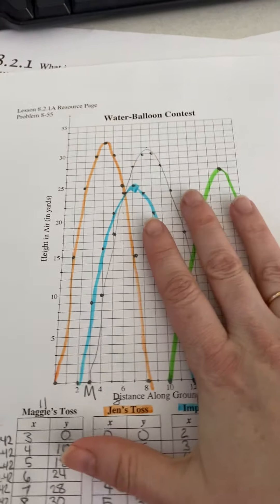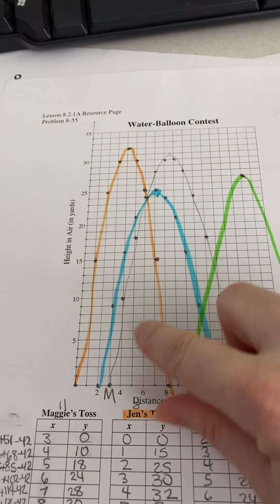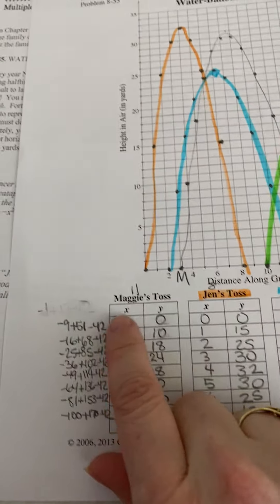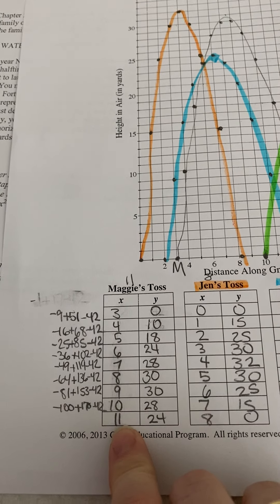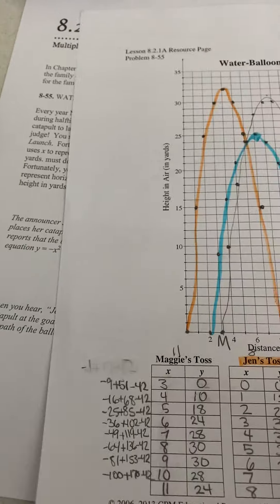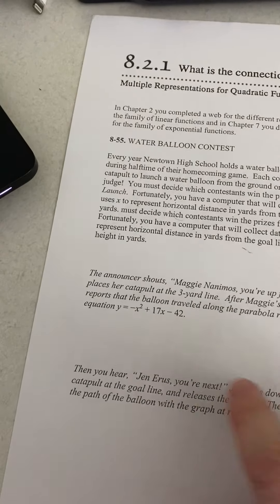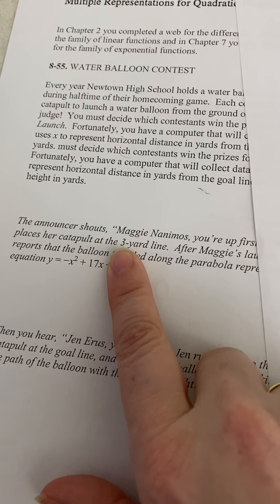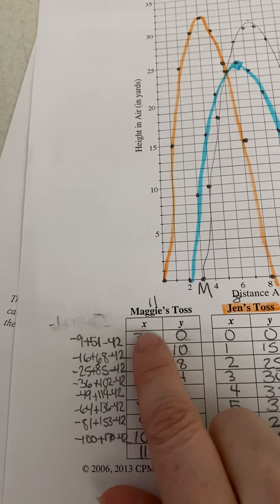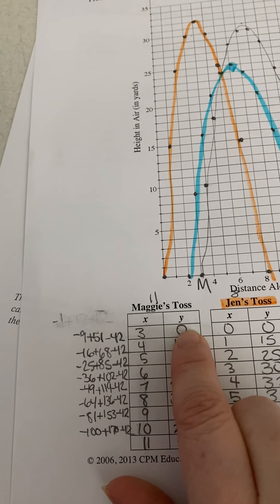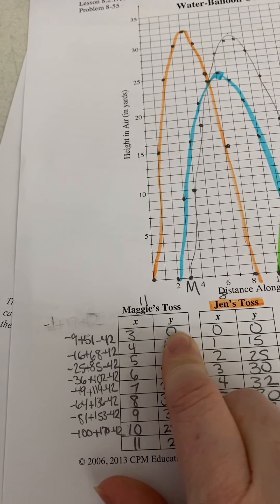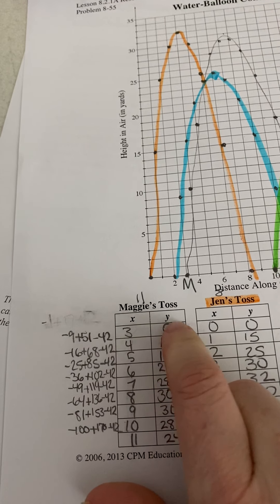On your resource page, Maggie is the one that's in pencil, and you're going to fill out a table. Now, it also tells you that Maggie started at the three-yard line. So, since she placed her catapult at the three-yard line, when it was there, it had gone up zero. Okay, so we know that one.